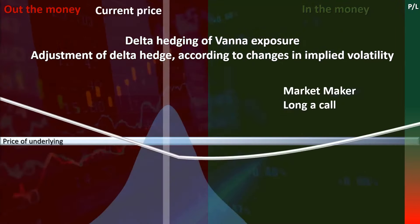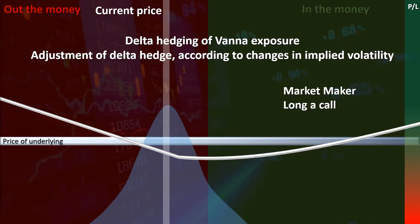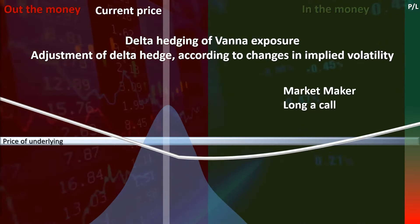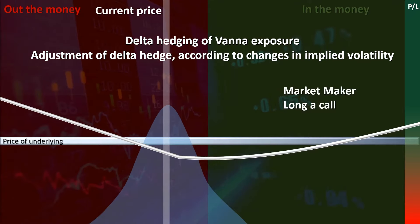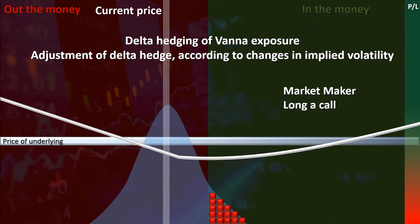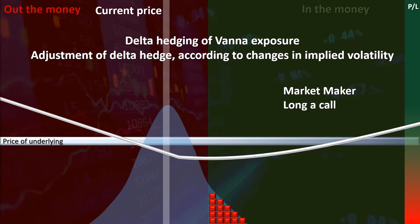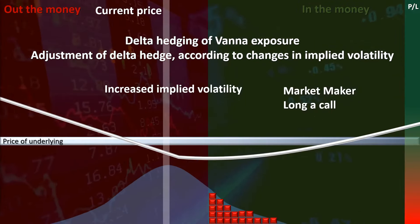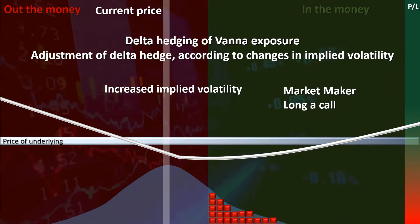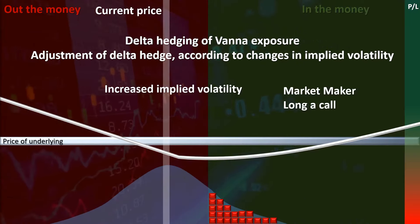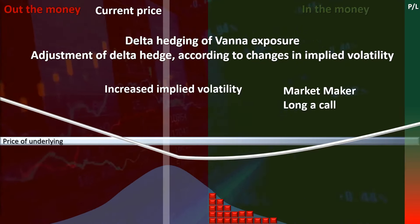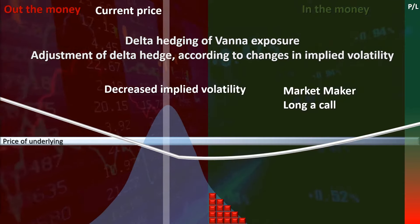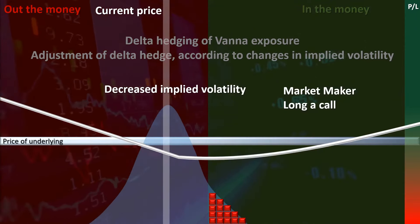As another example, consider a market maker who is long an out-of-the-money call. The probability that the option will expire in the money is represented by the blue shaded area that is in the money. Market makers who are long calls must delta hedge themselves by being short stock, and the size of the short stock hedge is proportional to the shaded blue area that is in the money. As implied volatility increases, the chances of the option expiring in the money increases, meaning that the market maker must delta hedge their Vanna exposure by being short more stock. As implied volatility decreases, the chances of the option expiring in the money decreases, and the market maker must delta hedge their Vanna exposure by reducing their short stock exposure by buying or covering some of it back.